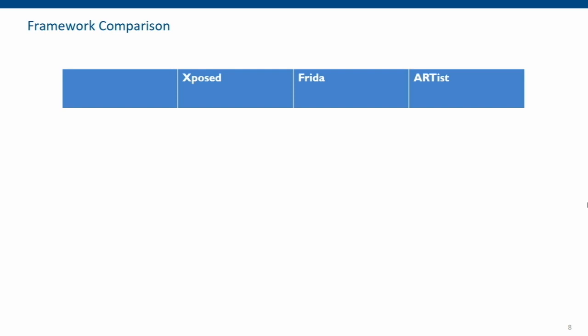Now that we have a basic idea of how all three work, we can compare them. For deployment: Xposed requires custom recovery and restricts you to certain devices. Frida needs a connected PC and an ADB connection — debug mode is not something you want on a layman user's device. For ARTIS, you're just installing an app. Assuming you've rooted your device — and there are ready-made applications that can just root a device — you can just go ahead. This is not only meant for experts but also for layman users.